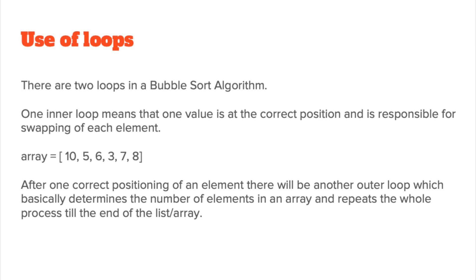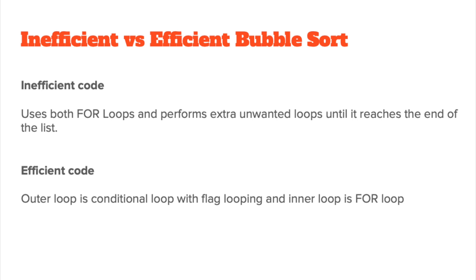There are two ways to code these loops. The inefficient way uses two for loops and performs extra unwanted iterations until it reaches the end of the list, even if the list is already sorted. The more efficient way uses a conditional while loop with a flag as the outer loop, and a for loop as the inner loop. In an exam you could probably do both, unless the pseudocode is specified. Two for loops is probably the easiest to remember; the other uses a while loop with a flag at the top and a for loop inside.